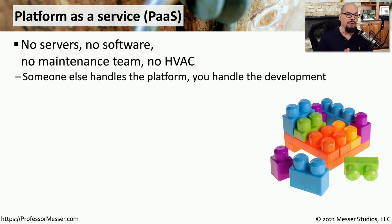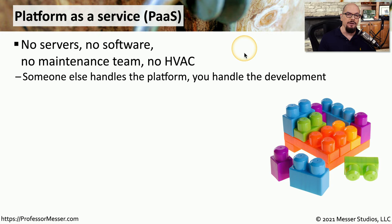There is a cloud model that is a middle ground between infrastructure as a service and software as a service. This middle ground is called platform as a service, or PaaS. In this model, the cloud service provider gives you a platform that you can use to develop your own applications. They provide the operating system, the infrastructure underneath, some virtualization services, and the building blocks you need to write your own customized applications.